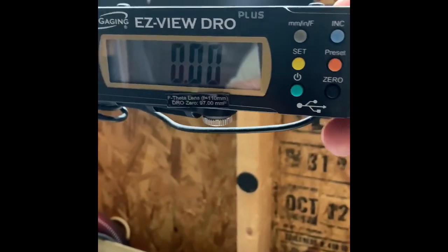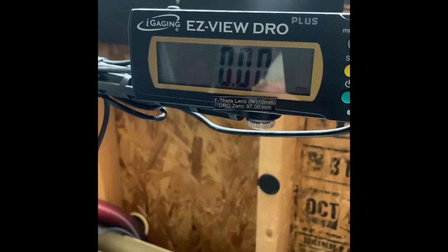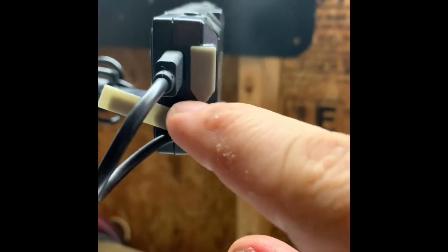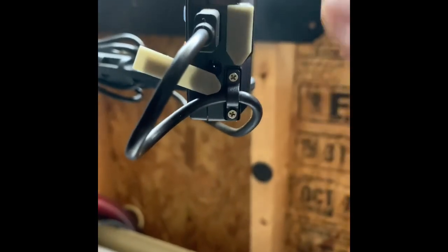The device itself is pretty simple. There is an external plug for power, the USB plug that goes down to the sensor, and then an additional output plug if you're going to be hooking this up to a Z axis.